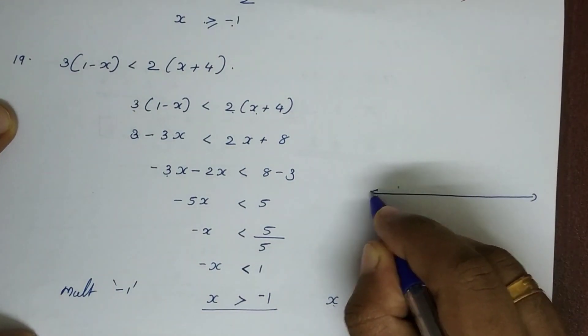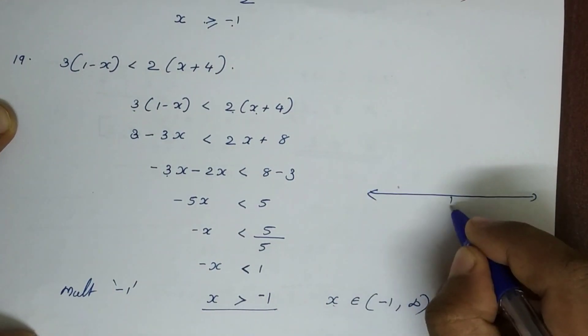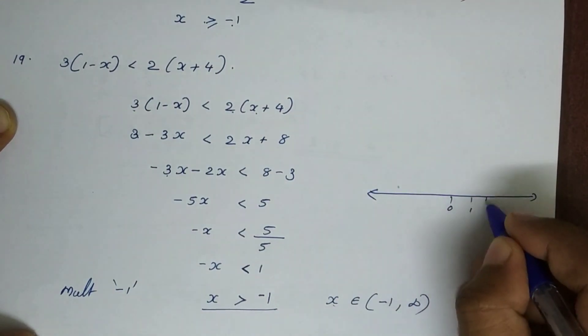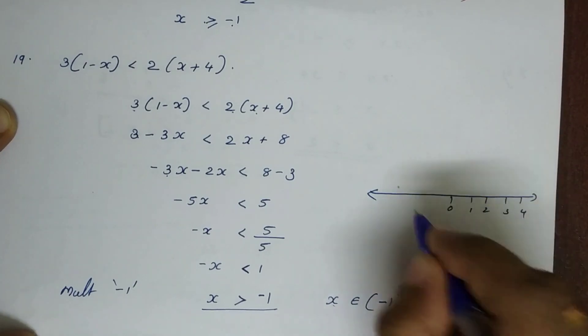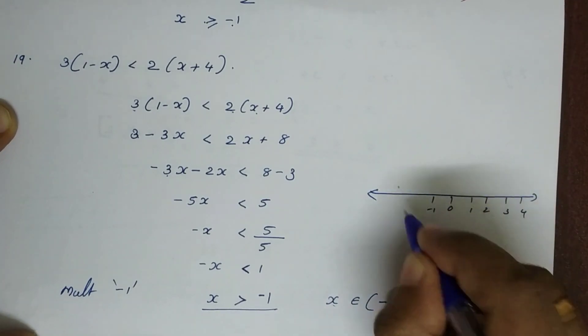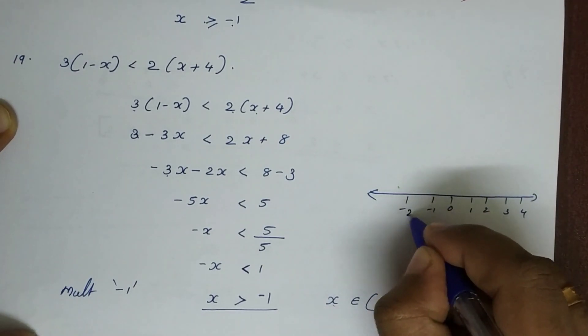On the number line we plot: 0, 1, 2, 3, 4 and then minus 1, minus 2. Since x is greater than minus 1, we shade the right side from minus 1 with a hollow circle at minus 1.